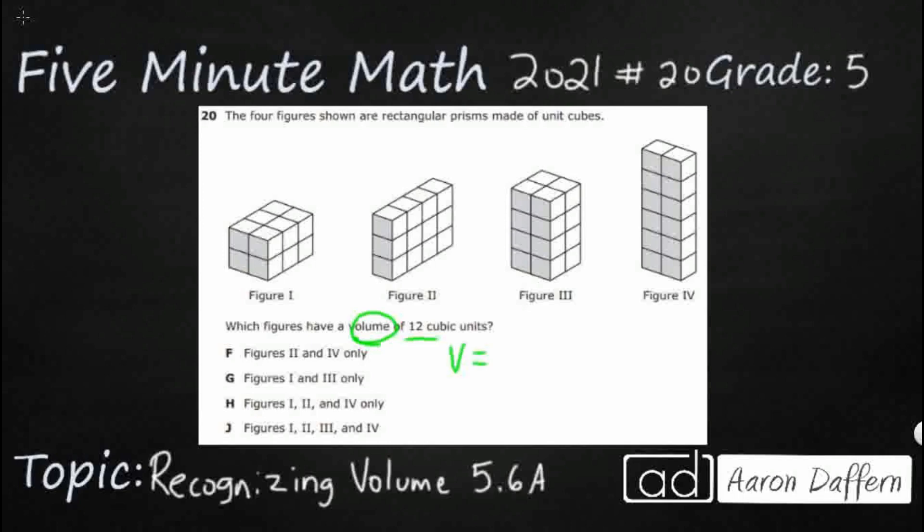There are two different ways to find volume. Volume is the amount of cubes that you can put into a three-dimensional space, so we can do length times width times height. We just take those three measurements, multiply those three.